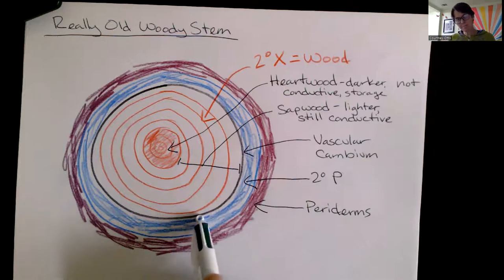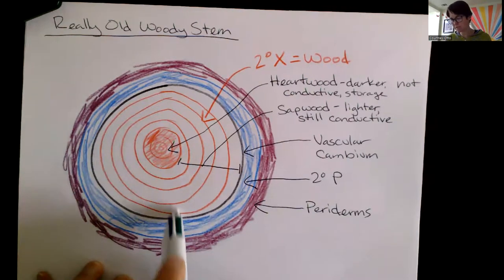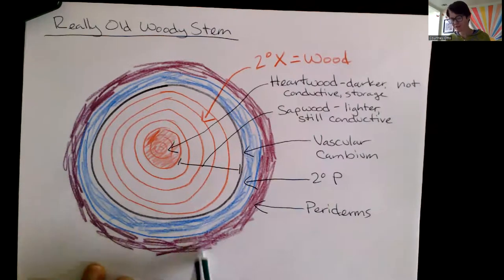Well that vascular cambium marks the boundary between the wood to the inside, right, all of the secondary xylem with our heartwood and our sapwood, and the bark to the outside.